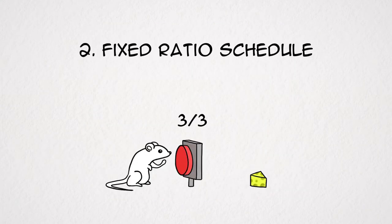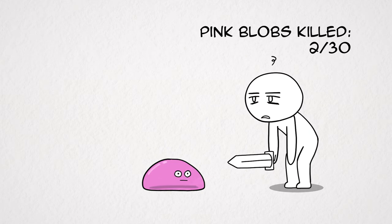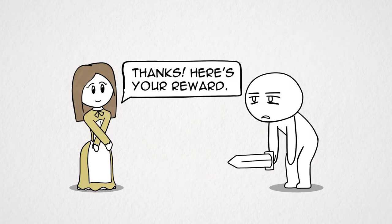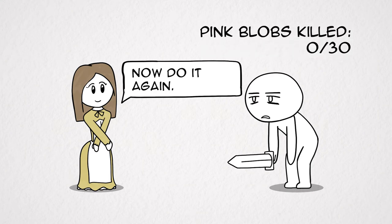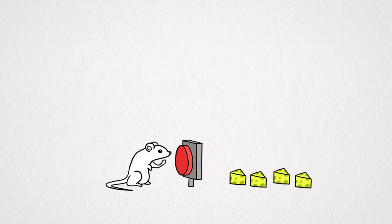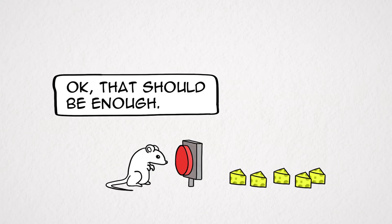2. Fixed ratio schedule. Wherein a reward is given after a certain number of button presses. It's reliable and consistent. No matter what side of the bed you wake up that morning, you can be assured that you'll get 700 experience points once you slay 30 pink slimes for the distressed maid. For this reason, it's the least effective schedule at keeping the rat mashing. A problem that's easily circumvented by introducing the element of randomness.